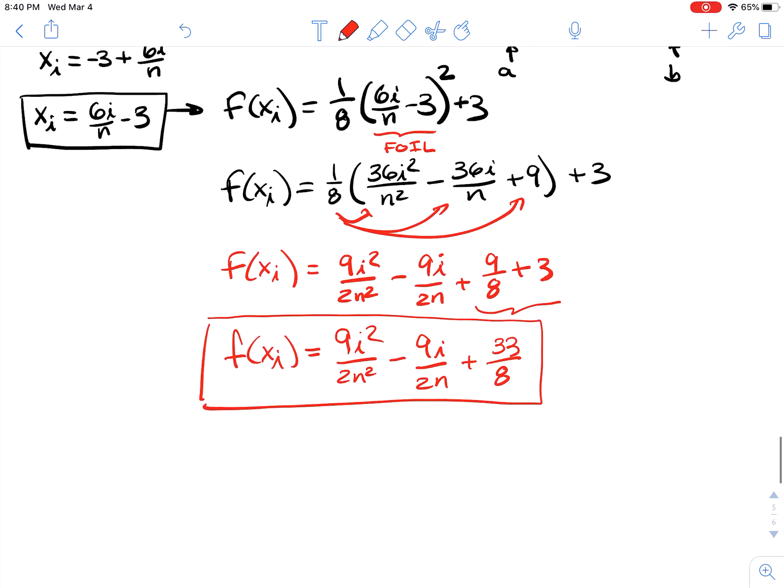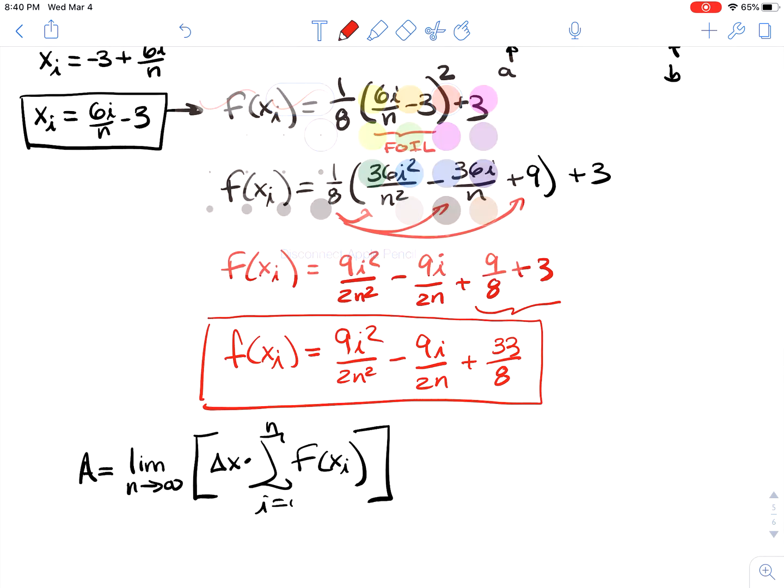Now we want to plug this into our area formula. Our area formula is going to be modified slightly because it's going to have a limit as the number of rectangles goes to infinity. And then we have delta x times the sum of f of x sub i's from i equals 1 to n. Just so that we can recall the delta x is the width of each rectangle and the sum of f of x sub i's is the sum of the heights and the width times height is the area of each rectangle and then the sum gives us the total area.